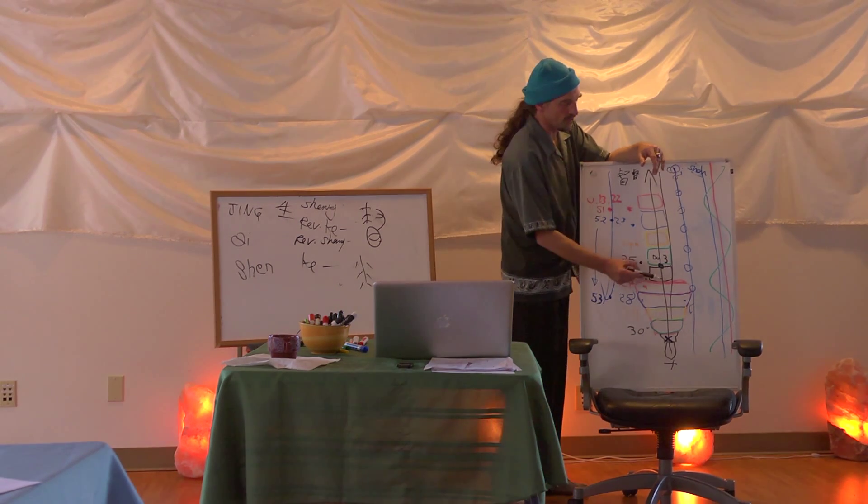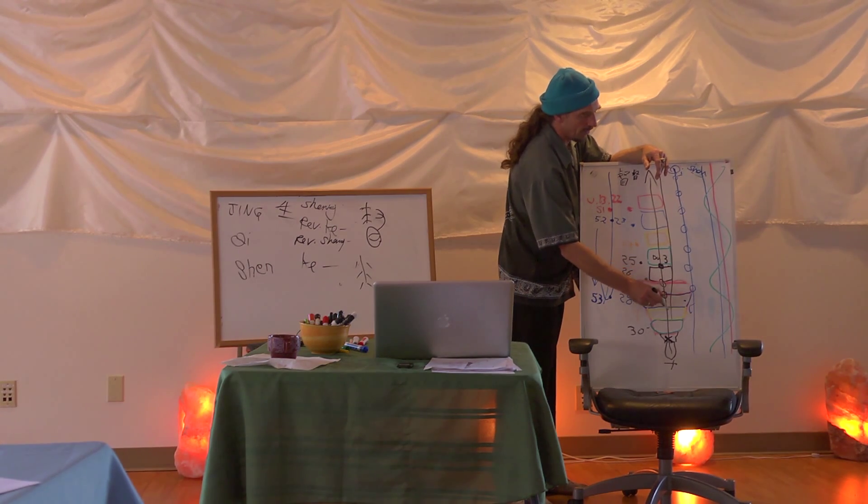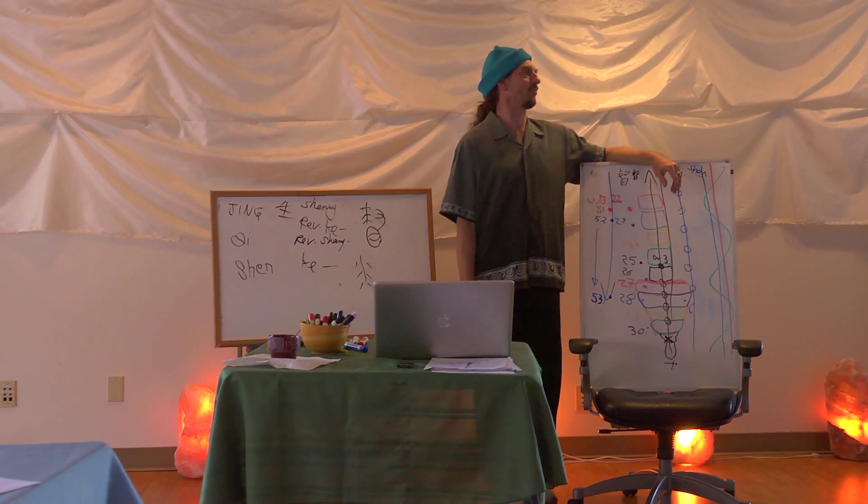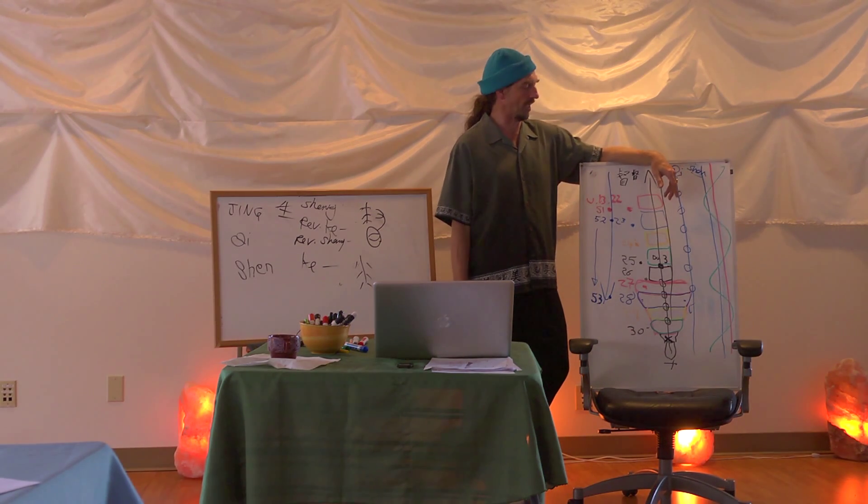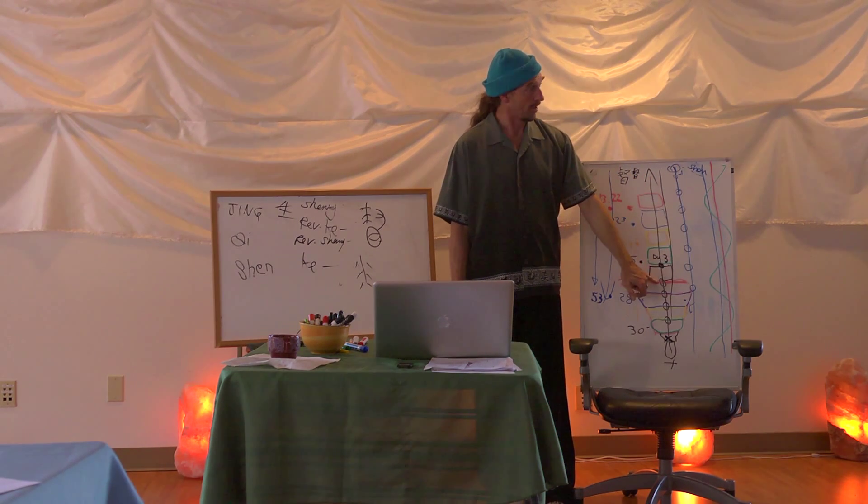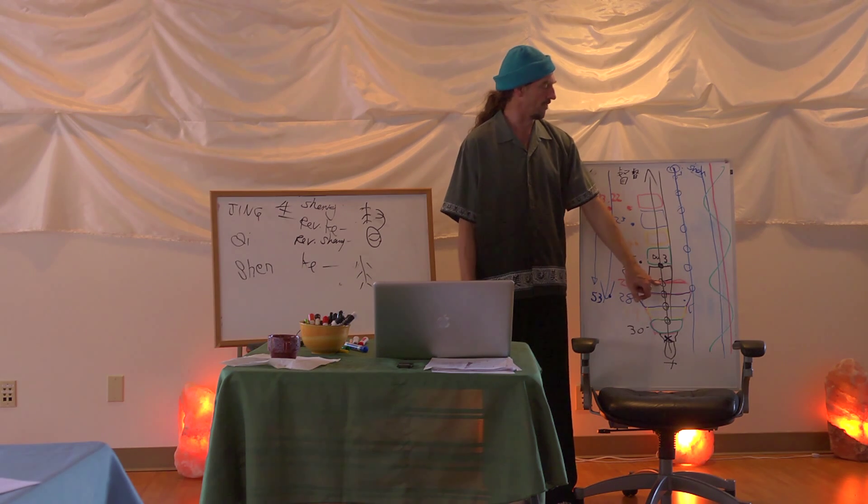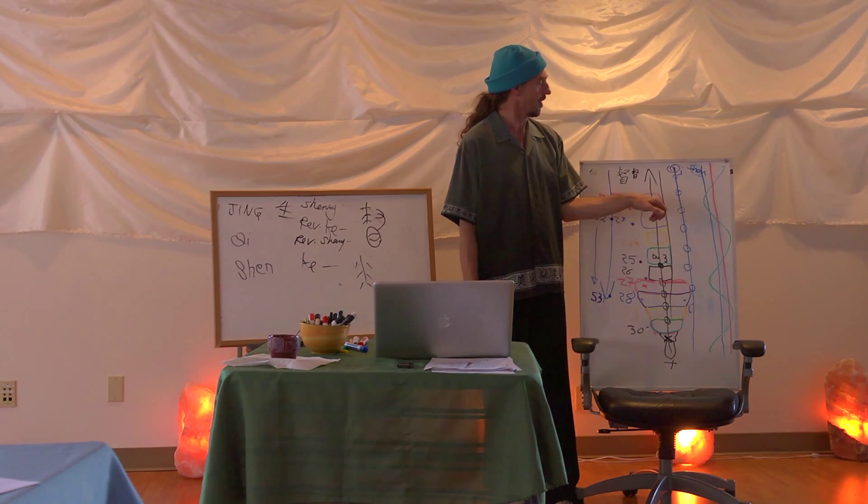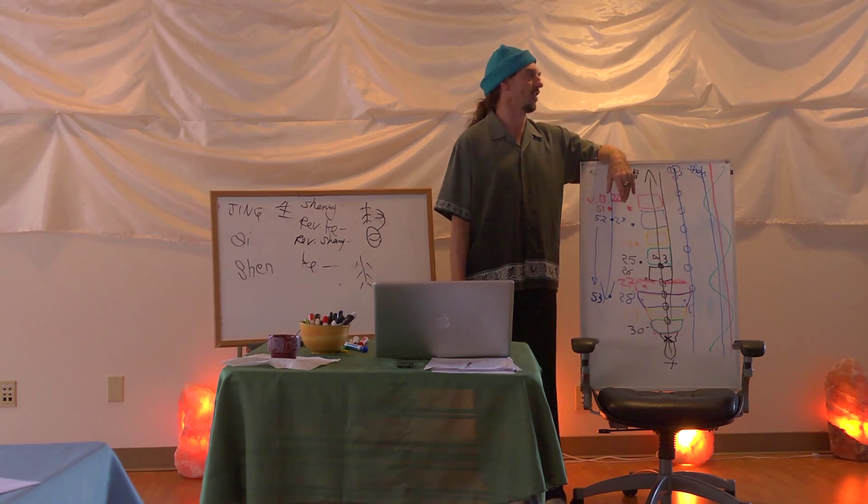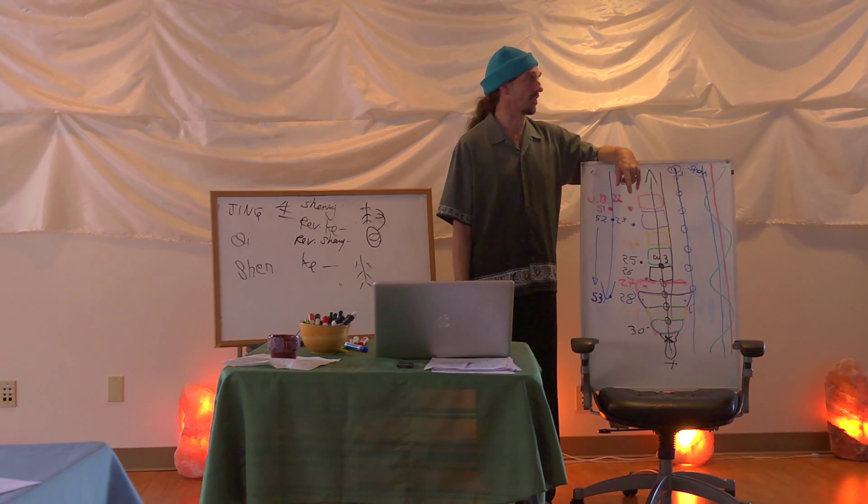Except that I believe that you can use any of these zones on the Governor channel to access the energies, to access the five element energies. That's just my belief. If you want to do that, I believe you can go for it. For example, this extra point here underneath L5 is incredibly useful. Shi Qi Jui Xia, people call it, which just means 17th wacky point in Chinese, pretty much. Or beneath the 17th vertebra. It's a very, very useful point. I think you can use any of the Du channel points to address the element and organ energetics. That's just my opinion. But many of them have not been defined in Chinese medicine yet.